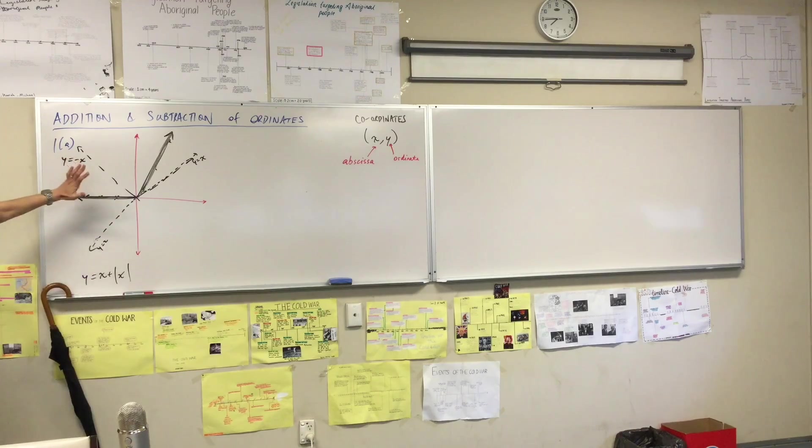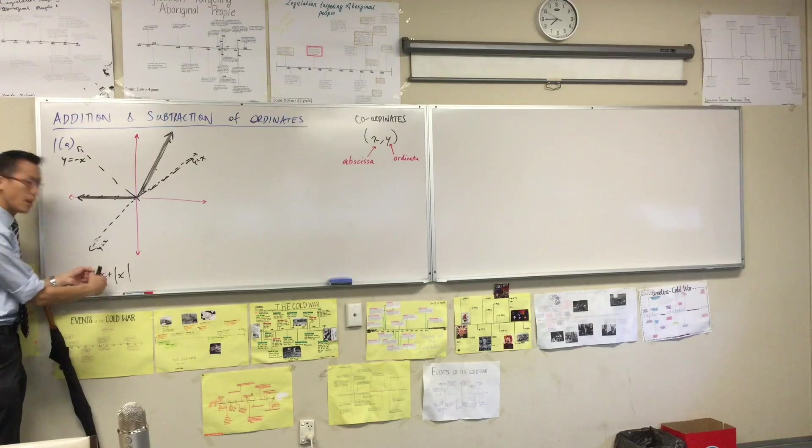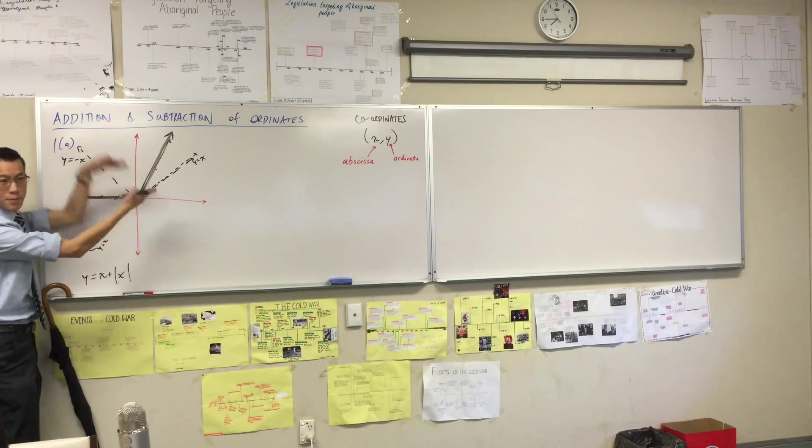Part B. I held your hands through this, right? I showed you that the first step was to look at the function you've been given, break it apart into its components, and then put them together, see what happens when you add ordinates.